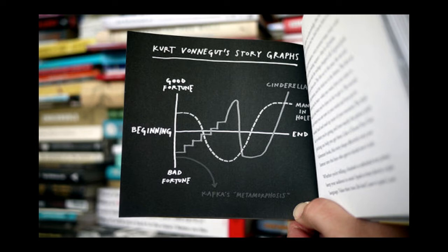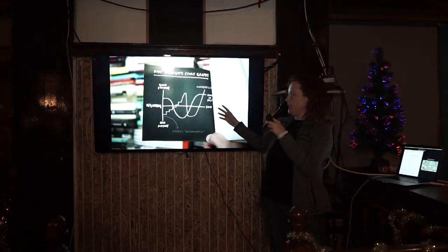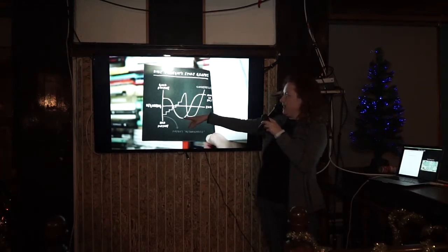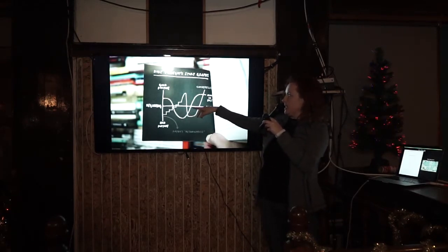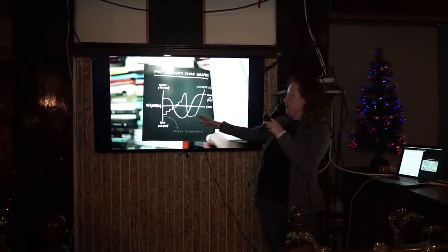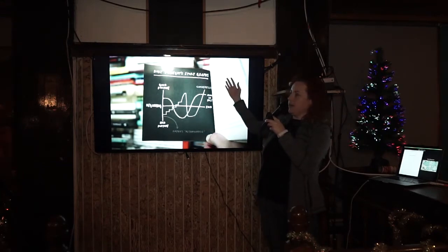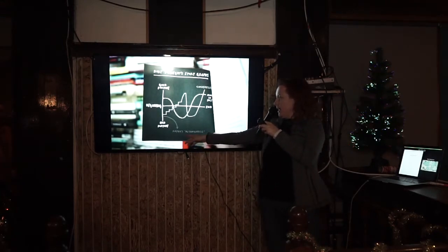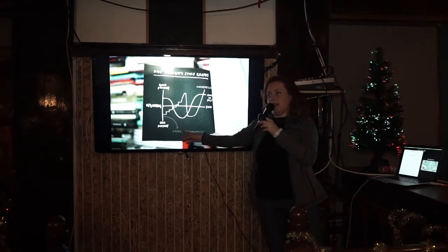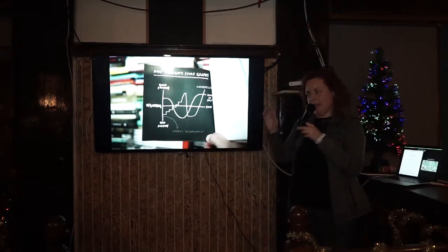He says there are certain patterns or paths which are very satisfying. We've got Cinderella: things seem to get better, she has something amazingly great, then it goes really really bad, and then it ends up going better again. I really like Kafka's Metamorphosis down here, which is just: it's bad, and then it gets worse.